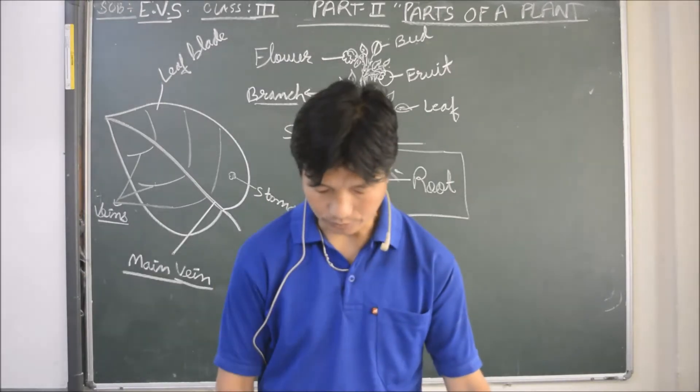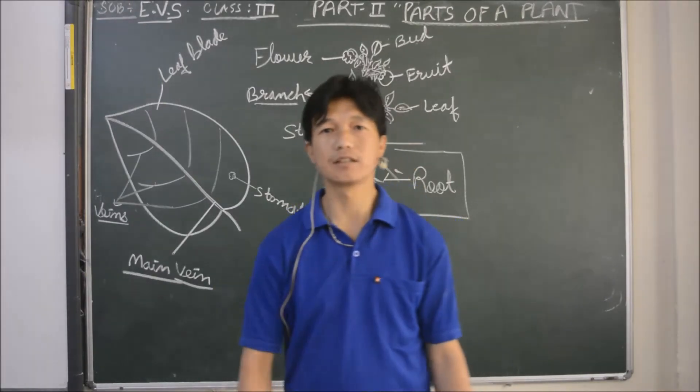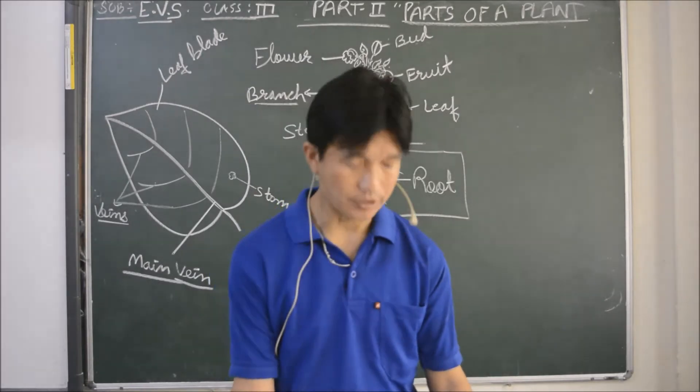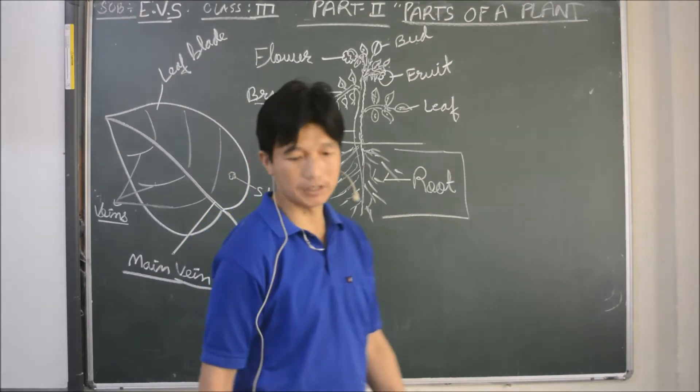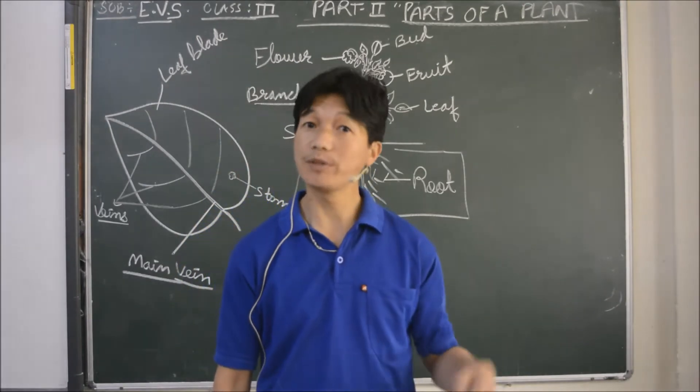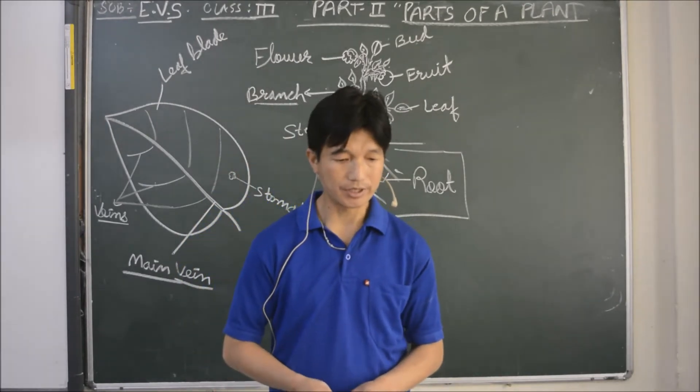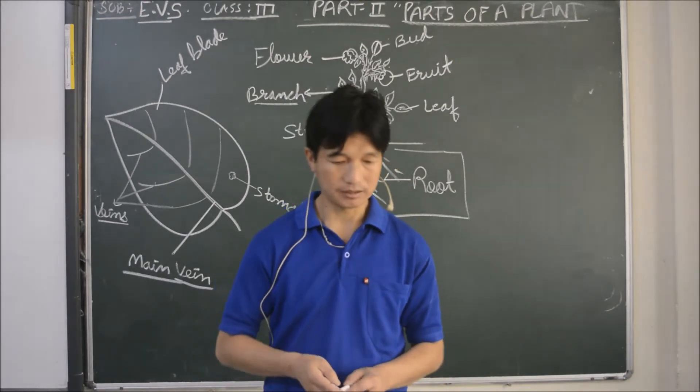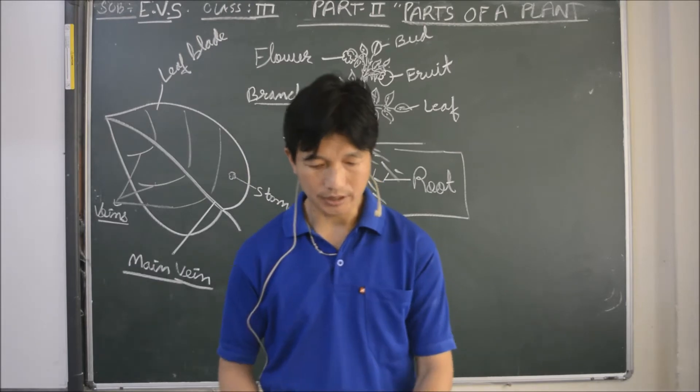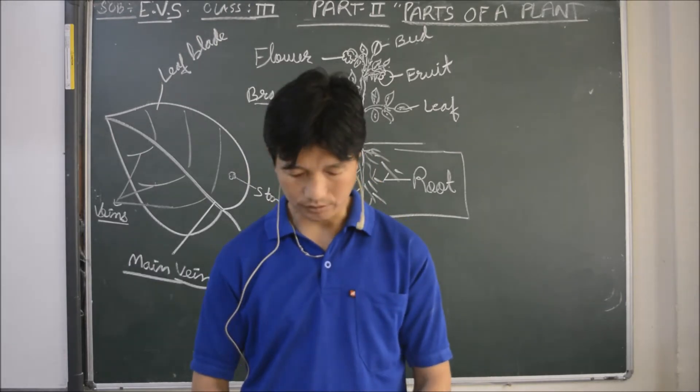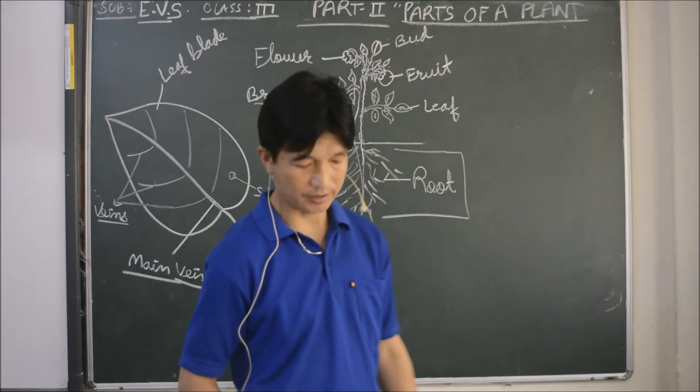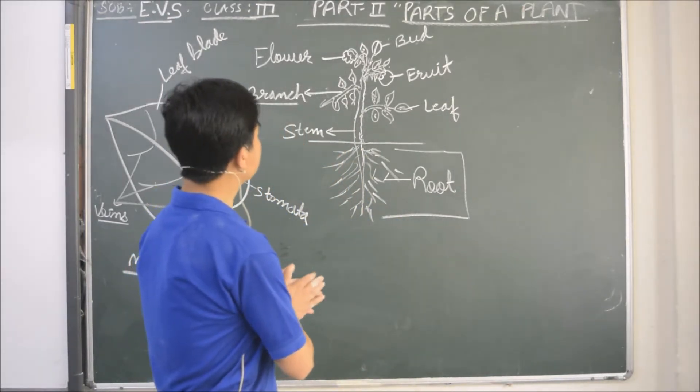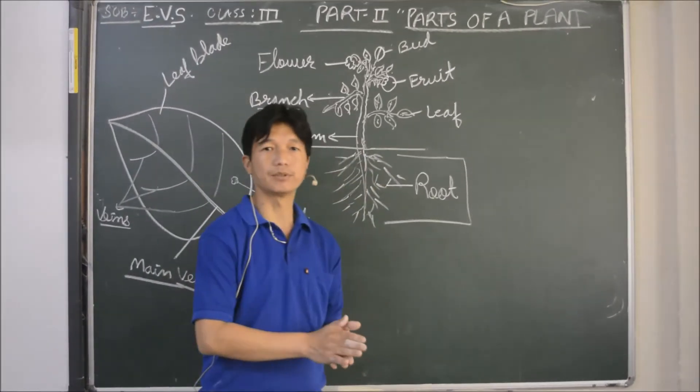Dear children, so today is the second class on EVS on the chapter Parts of a Plant. Previous class we have done about types of plants and different types of plants we have discussed. So today let's learn about parts of a plant. Basically we have learnt different types of plants.